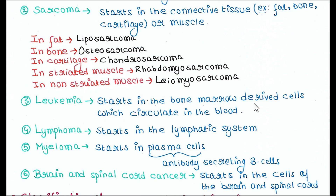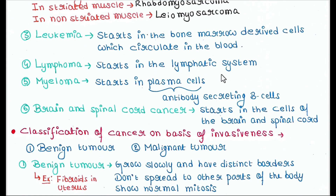Next is leukemia — it starts in the bone marrow derived cells which circulate in the blood. Next is lymphoma — it starts in the lymphatic system. Myeloma starts in the plasma cells, which are basically B cells that secrete antibodies. And then brain and spinal cord cancer, which starts in the cells of the brain and spinal cord.